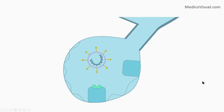Hello, I am Dr. Azaz from medicovisual.com and in today's video we will talk about the mechanism of action of adenovirus based coronavirus vaccines. These vaccines include for example the Oxford-AstraZeneca vaccine, the CanSino vaccines and Johnson & Johnson's vaccine, and some other vaccines as well that use adenovirus vector.